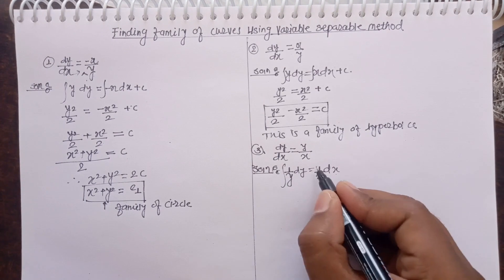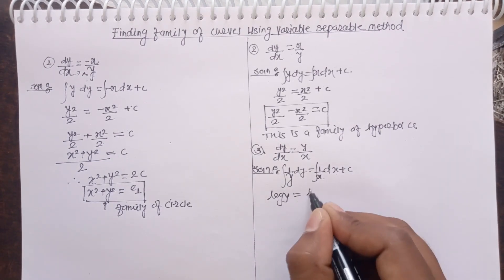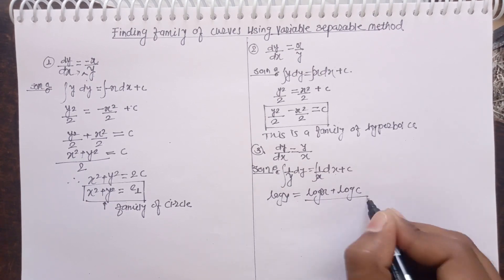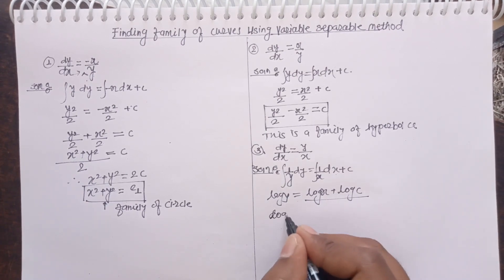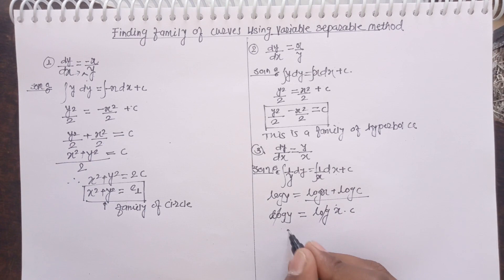Now we have to take the integration on both sides. This integration is log y. This integration is log x plus log of c. Here we have log a into log b. What is going on? Log of a into b. x into c. Log log get cancel. Y equals to x into c.